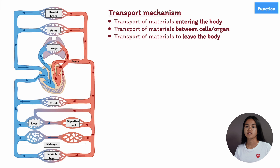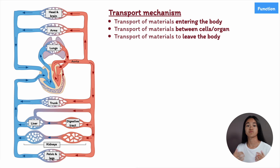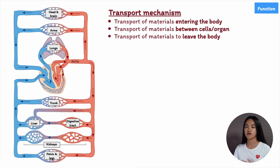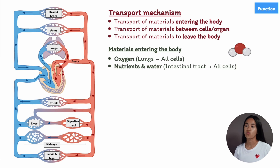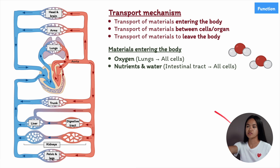Whether we're talking about bacteria or humans, all organisms need to exchange materials with the external environment because the body requires nutrients and also produces waste products that need to be removed. Substances that enter the body from the outside environment include nutrients, water, and gases. For oxygen, for example, it moves from the lungs to all cells.